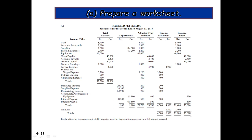For adjustment number two, supplies expense is debited and supplies is credited $300. Depreciation expense is $900 and accumulated depreciation is $900 credit. Interest expense is debited and interest payable is credited. Note that six account titles were absent in our original unadjusted trial balance, so we need to insert those account titles.